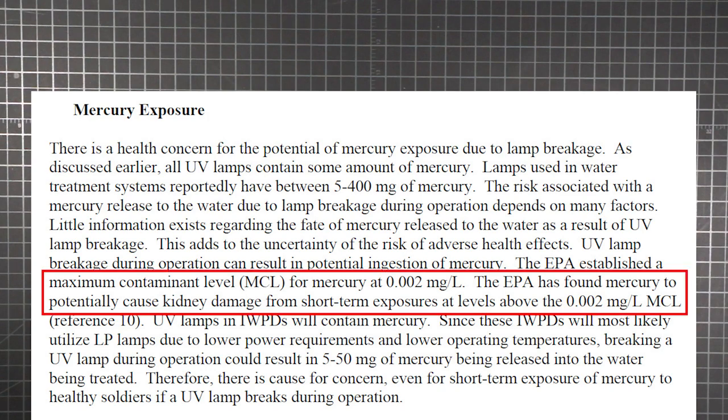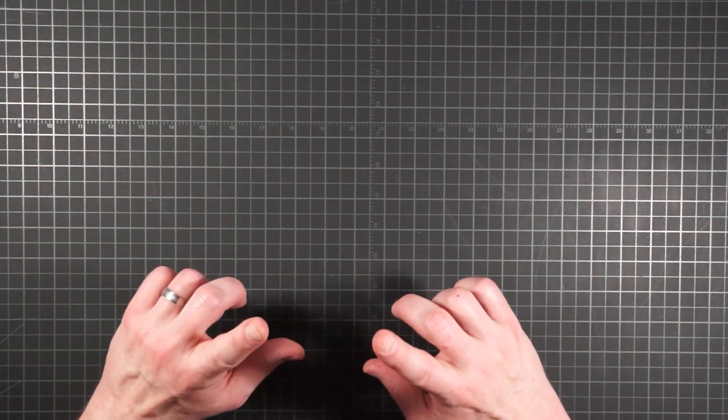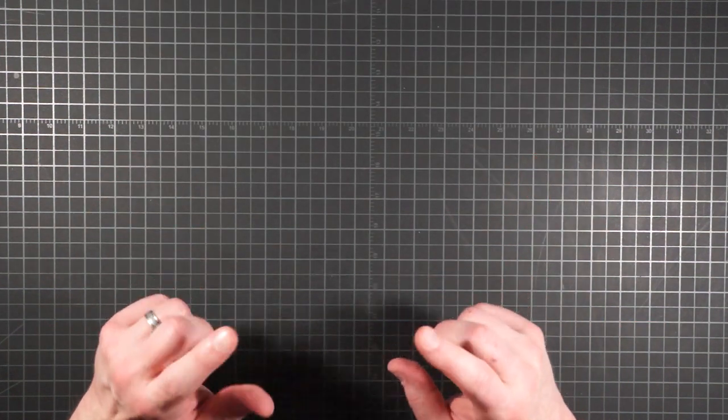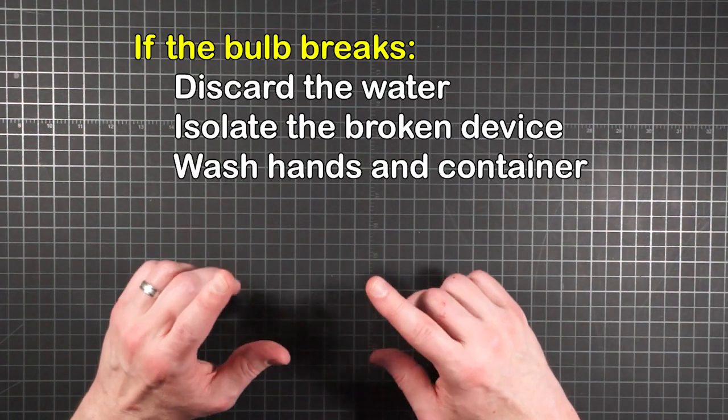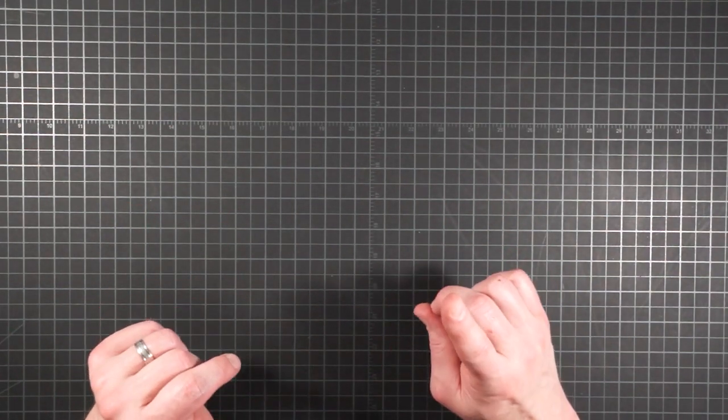Well, in 2006, the military produced a report on ultraviolet light disinfection in the use of individual water purification devices, or IWPDs. In the report, they address the issue of mercury exposure. The EPA sets the maximum contaminant level for mercury at 0.002 milligrams per liter. That's two thousandths of a thousandth of a gram of mercury in a liter of water. Above that, there is the risk of kidney damage from even a short-term exposure. According to the report, even the low-pressure UV lamps used in IWPDs can release from 5 to 50 milligrams of mercury into your water if broken during treatment. So if for whatever reason the bulb breaks on you, discard the water, isolate the device, and wash both your hands and the container in question. And then resort to your backup treatment method. Because you brought a backup, right?